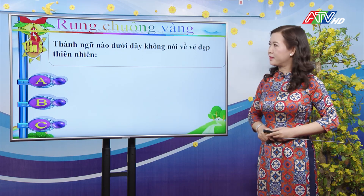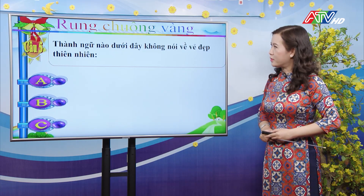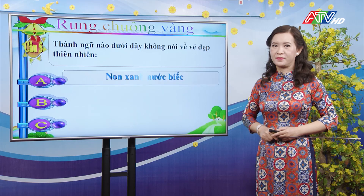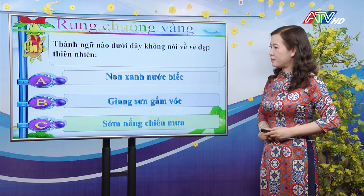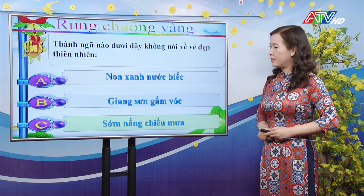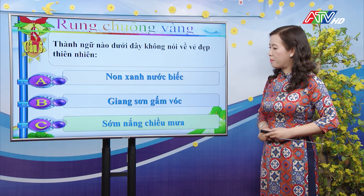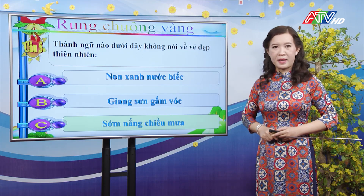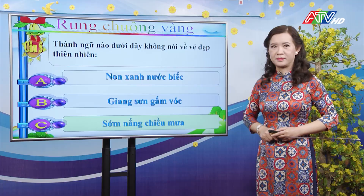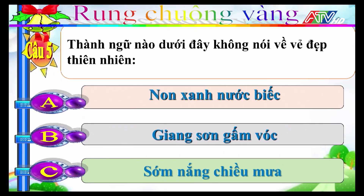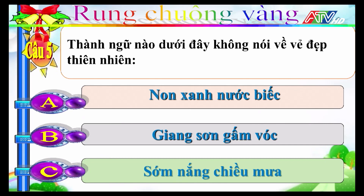Câu 5: Thành ngữ nào dưới đây không nói về vẻ đẹp thiên nhiên? A-Non xanh nước biếc; B-Giang sơn gấm vóc; C-Sớm nắng chiều mưa. Đáp án đúng là C: câu "Sớm nắng chiều mưa" không nói về vẻ đẹp thiên nhiên.